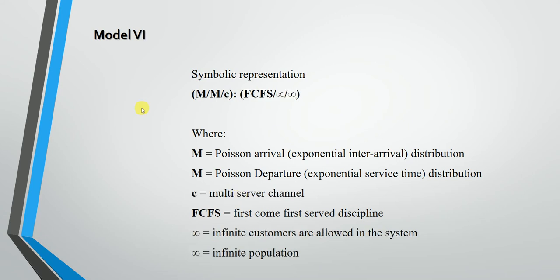Model 6 has the symbolic representation M/M/C:FCFS/∞/∞. Here, C represents a multi-server channel system — there is a parallel multi-server channel system. The remaining symbols carry the same meaning as seen in earlier models.